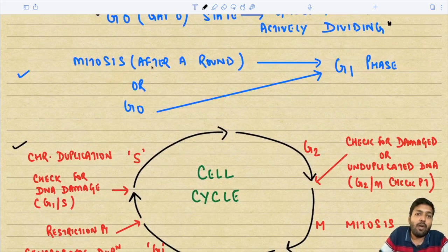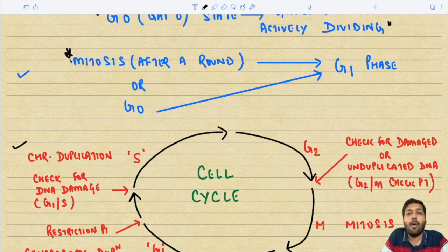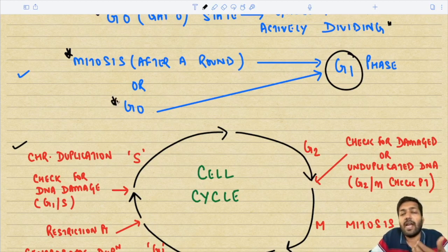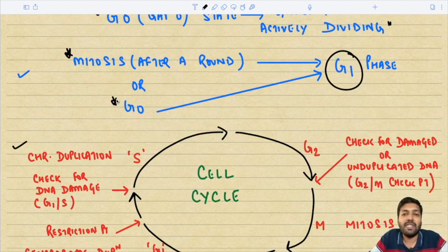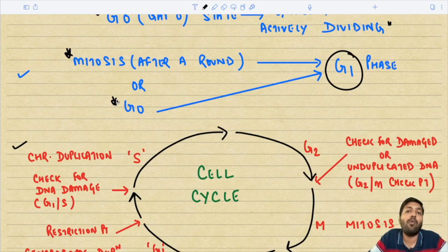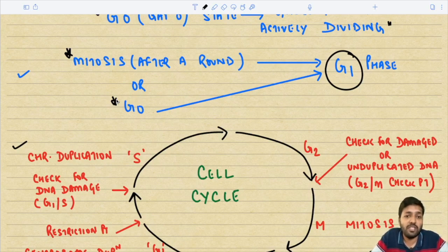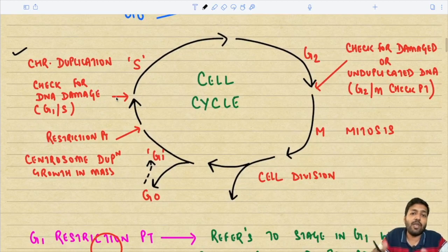After a round of mitosis, daughter cells may again go to the G1 phase. Alternatively, a quiescent cell, after experiencing some kind of cell damage, will also enter the G1 phase. So the source of cells in G1 is either a cell that has already performed mitosis or a quiescent cell that now wants to enter a state of division.